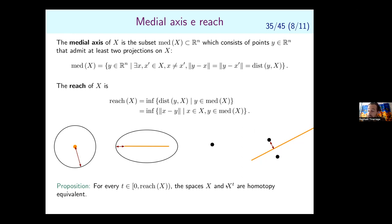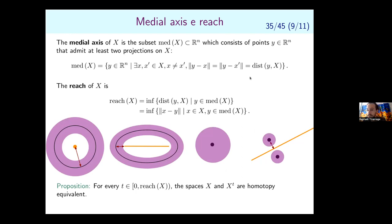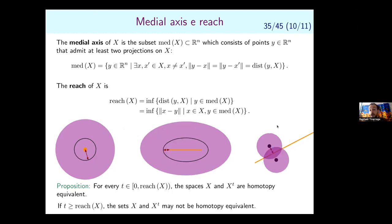A key result: if the parameter t is less than the reach of the set, then the t-thickening is homotopy equivalent to the set itself. Visually, thickening a circle by a value less than its radius gives an annulus — homotopy equivalent to the circle. If you exceed the reach, the thickening may change homotopy type (e.g., a disk instead of an annulus for the circle).